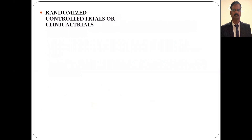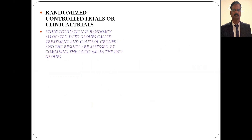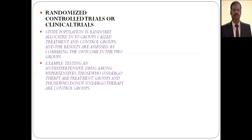Randomized controlled trials (RCTs) or clinical trials: the study population is randomly allocated into a treatment group (also called the experimental group) and a control group (those receiving a placebo). Results are assessed by comparing outcomes in the two groups after a follow-up period. Example: testing an anti-hypertensive drug among hypertensives — those undergoing therapy are the treatment group, and those who do not undergo therapy are the control group.